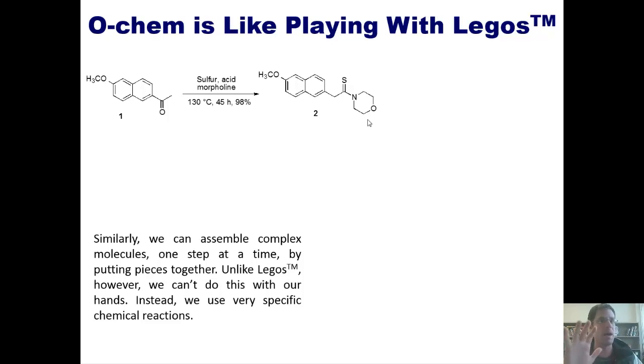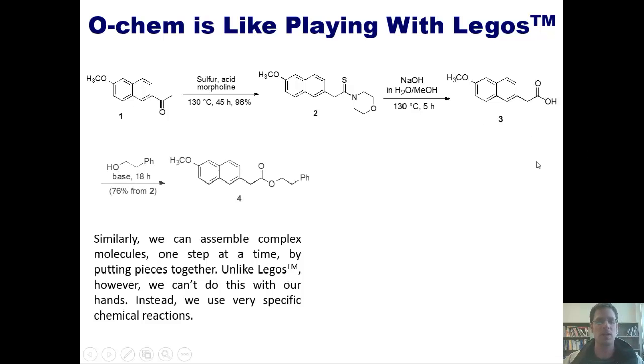You might also notice that this reaction proceeded in a 98% yield, which is pretty good. At this point, we took molecule two and treated it under these conditions to convert it into molecule three. Molecule three was then manipulated further using these conditions to turn it into molecule four. This gave, by the way, a 76% yield over two steps for molecule two.